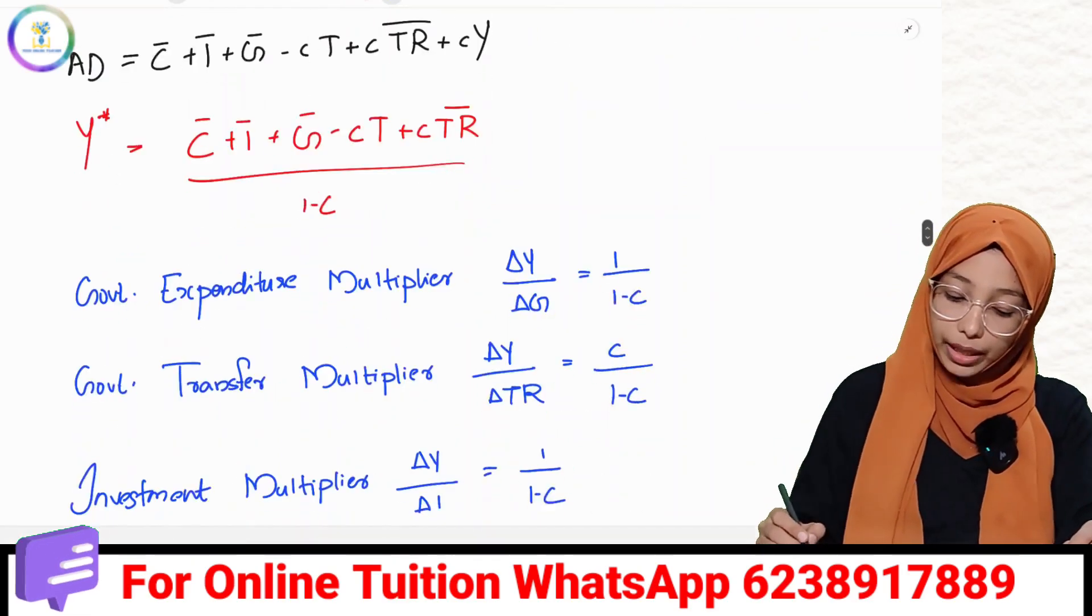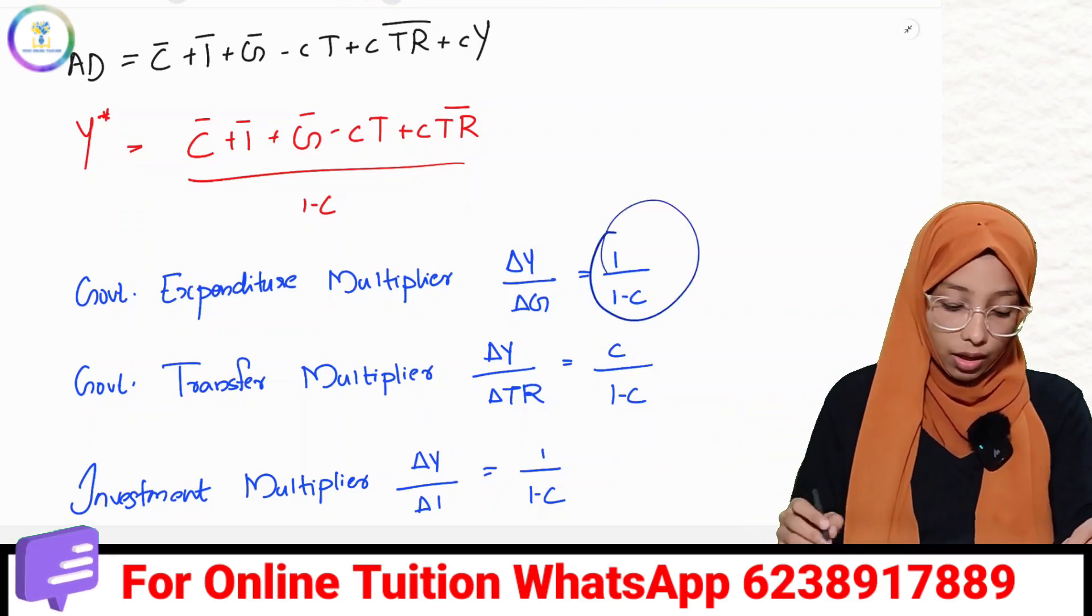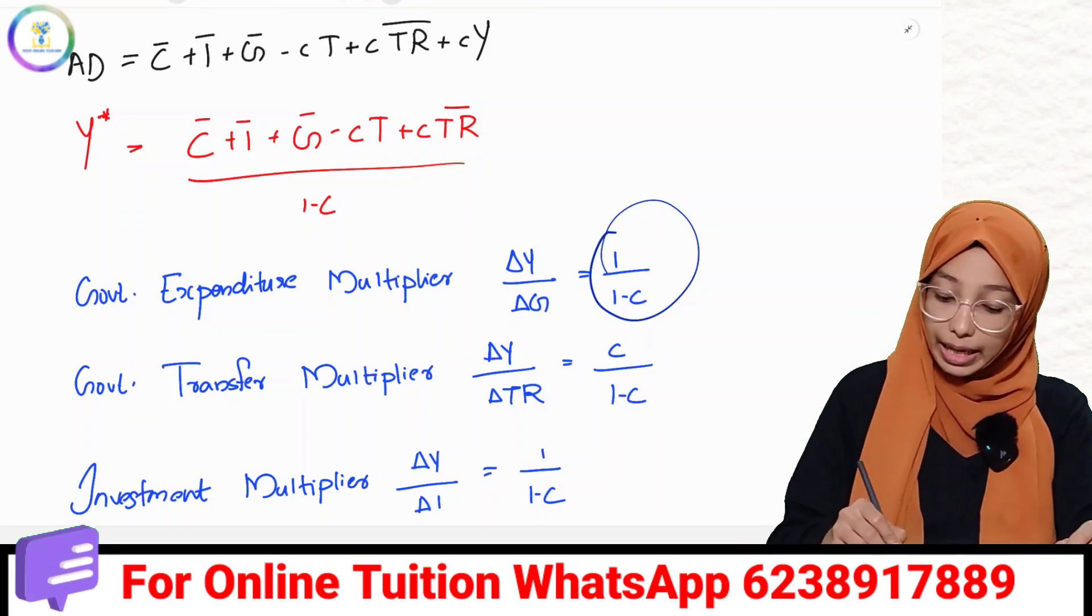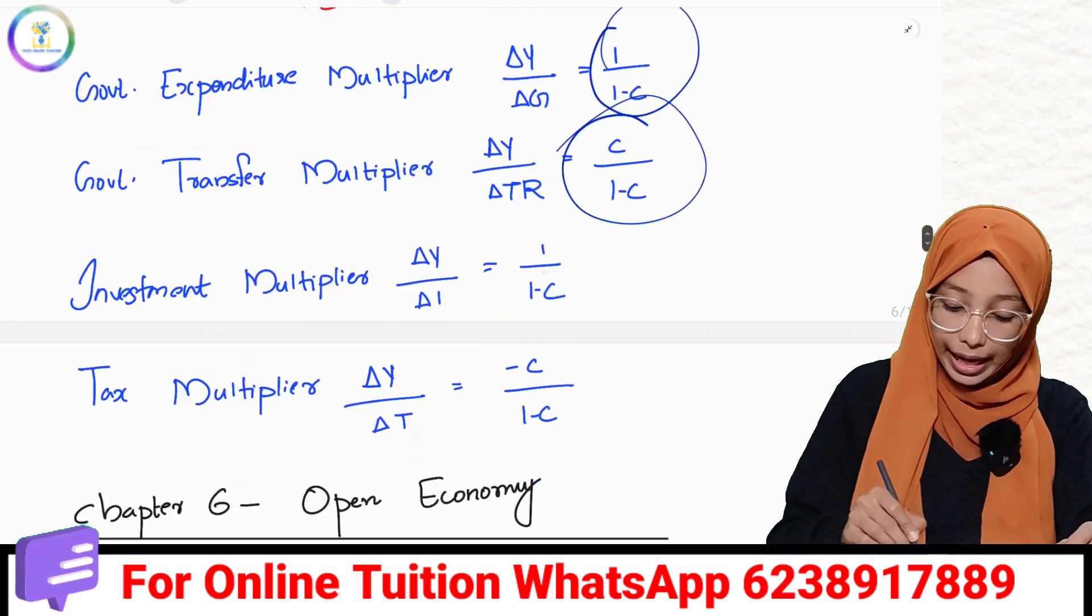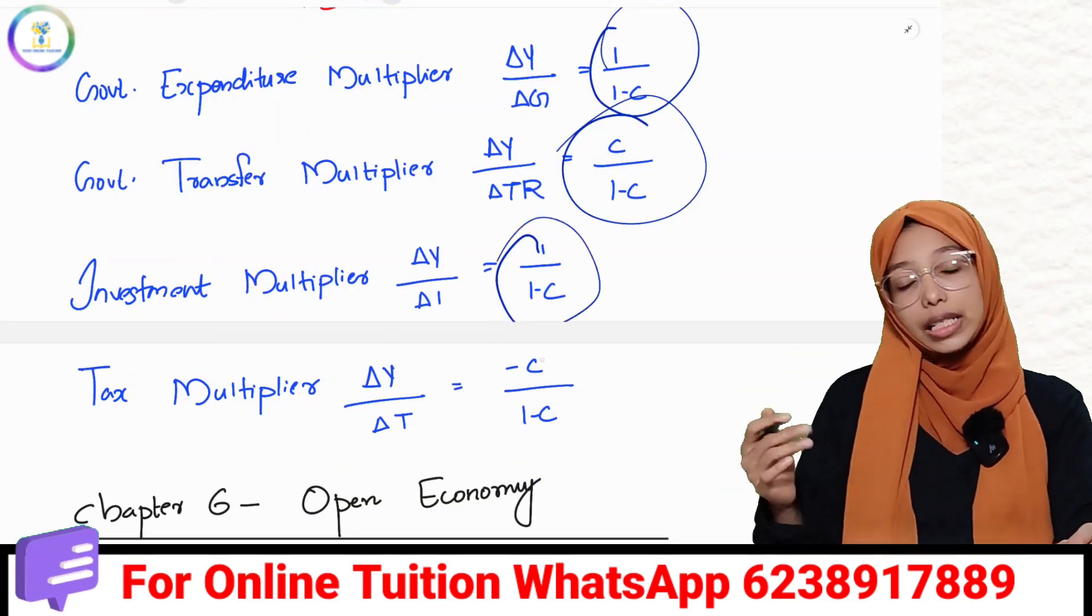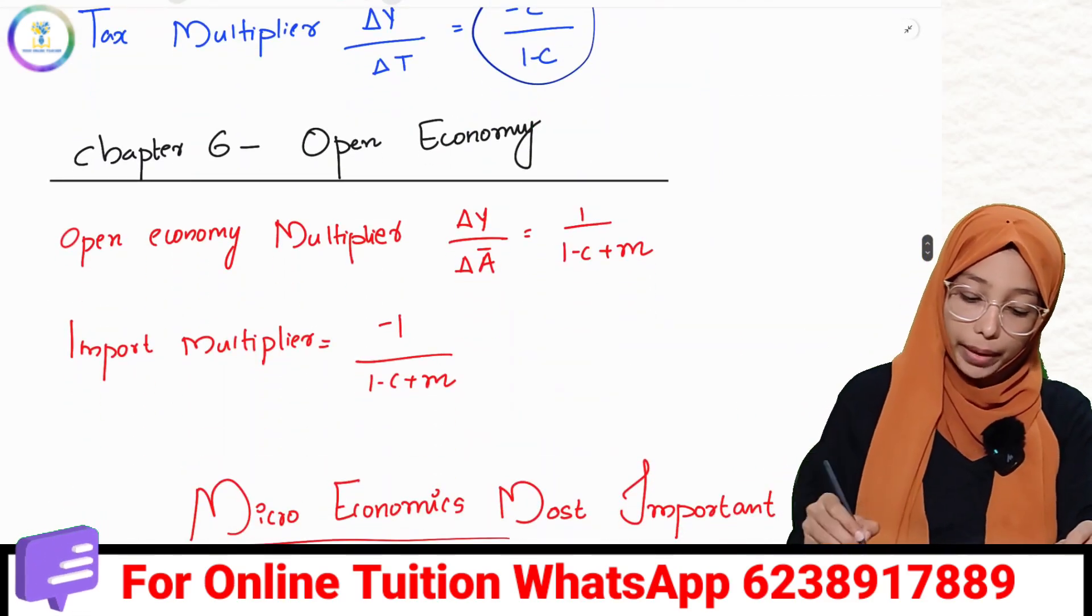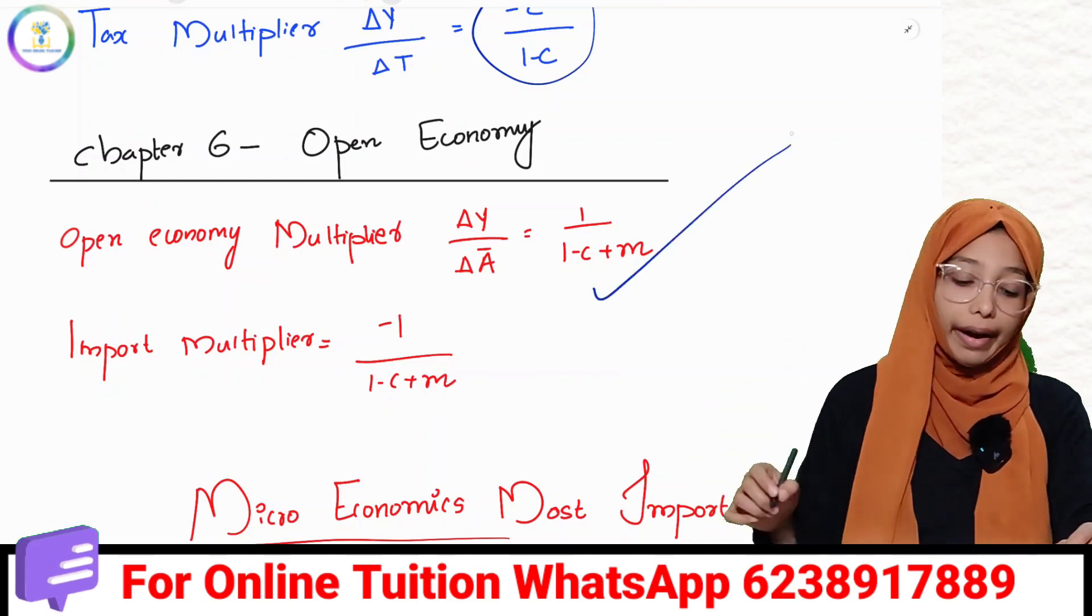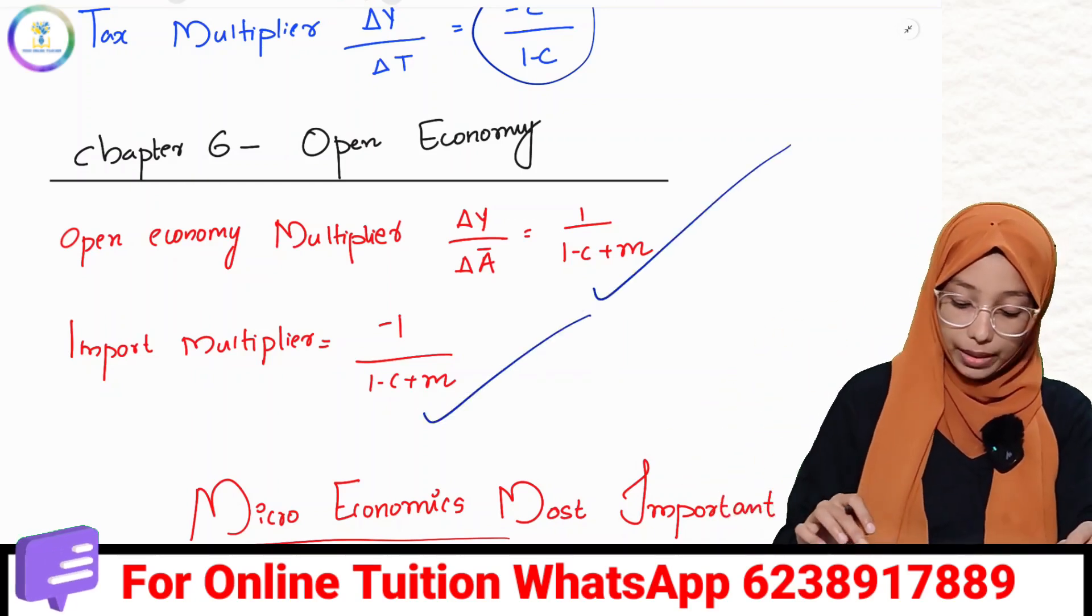Government expenditure multiplier is 1 by 1 minus c, delta Y by delta G. Government transfer multiplier is c by 1 minus c. Investment multiplier is 1 by 1 minus c. Tax multiplier is minus c by 1 minus c. Chapter 6, open economy: the open economy multiplier is 1 by 1 minus c plus m. Import multiplier is minus 1 by 1 minus c plus m.